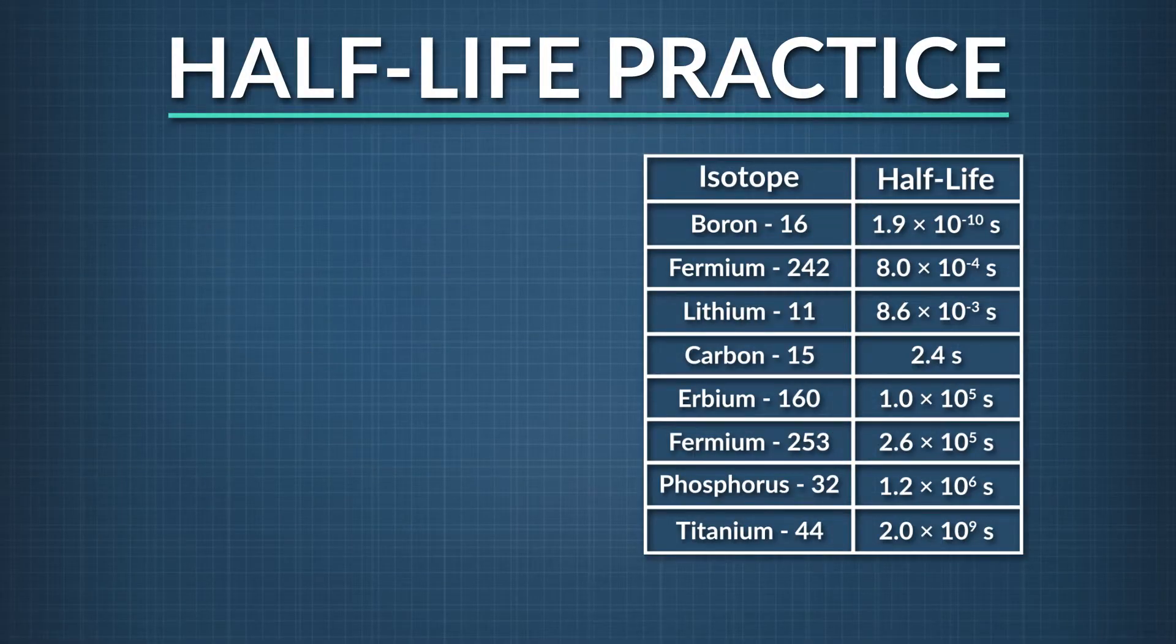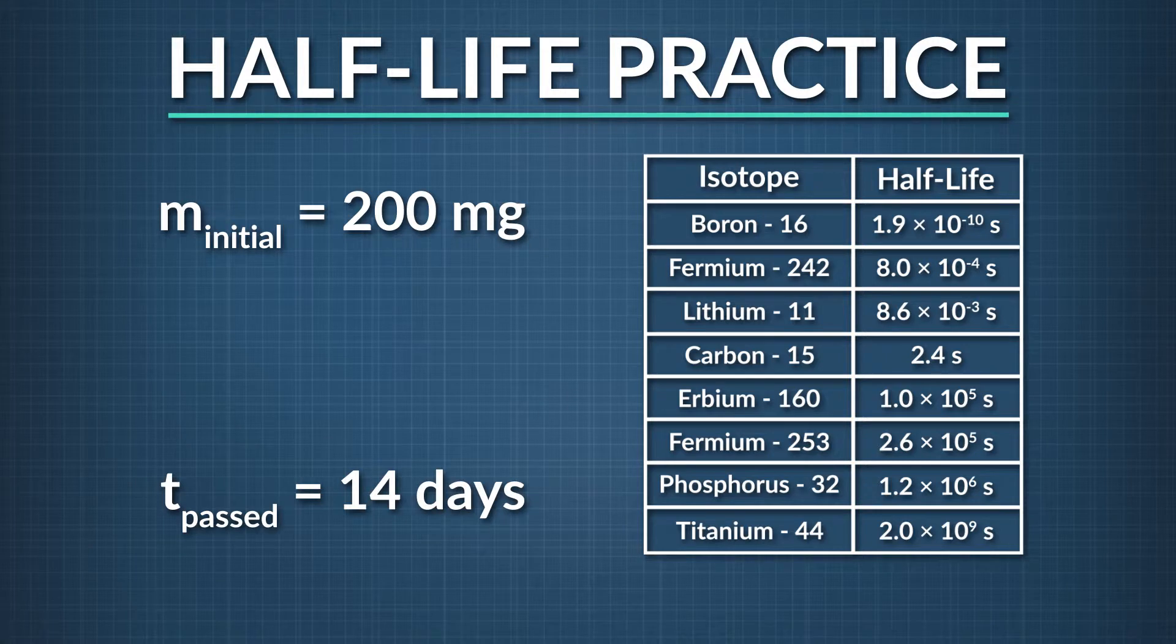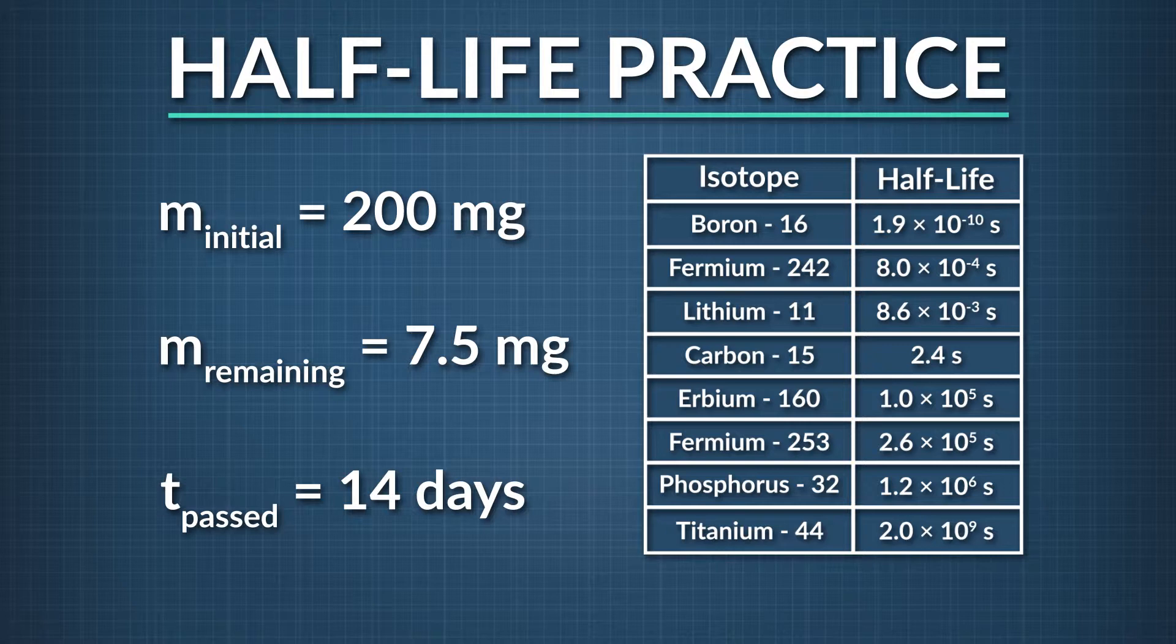Let's try another question about radioactive isotope half-life. As part of a radioactive chemical identification project, you are given a 200 milligram sample of an unknown element. After 14 days, the sample has decreased to 7.5 milligrams. Along with the sample, you are provided a chart showing radioactive isotope decay rates and are told the sample is made of one of the elements listed. What isotope is the sample made of?